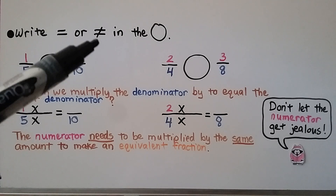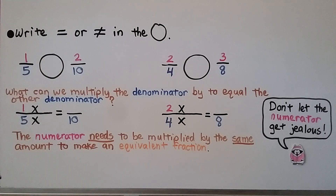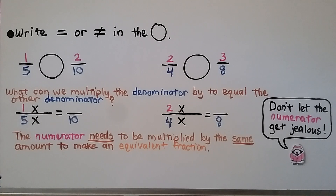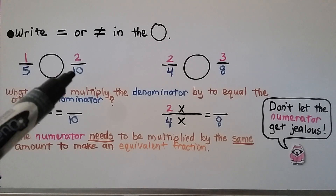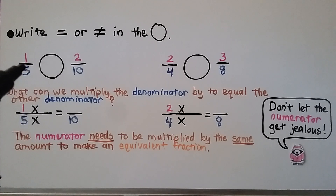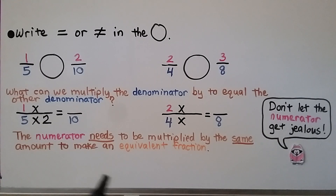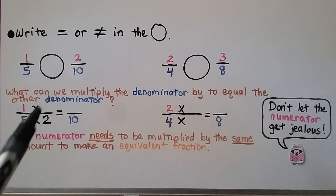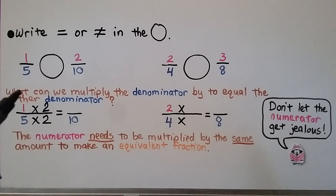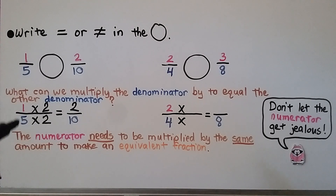We need to write equal or not-equal-to in the circle. We have one-fifth and two-tenths. What can we multiply the denominator 5 by to equal 10? Five times two equals ten. So we multiply the denominator by 2, and the numerator must also be multiplied by 2: one times two equals two. So we write 2 for our new numerator. One-fifth is equal to two-tenths, so this is equal.